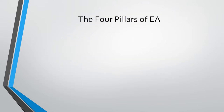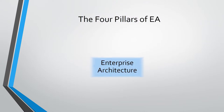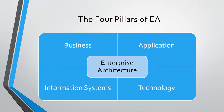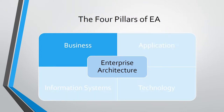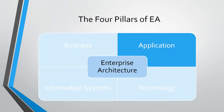Similar to the principles of traditional architecture, Enterprise Architecture has identified four crucial pillars within the organization. The first pillar is the business aspect, which considers the processes and standards by which the organization conducts its daily operations. The second is the application aspect, which examines how effectively the organization is able to follow through on those processes and standards.